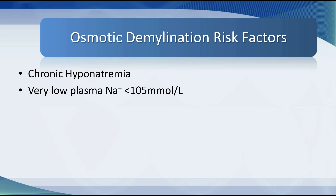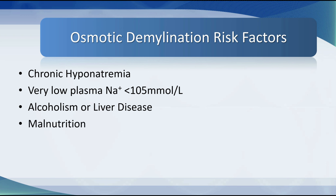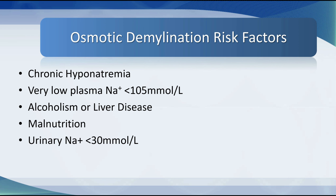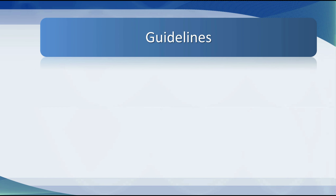Over several decades, a series of risk factors have been identified indicating a patient is at high risk for osmotic demyelination syndrome. These include: chronic hyponatremia; a very low plasma sodium, particularly below 105 millimoles per litre — indeed below 110 is considered high risk; alcoholism or liver disease; malnutrition; a urinary sodium of less than 30 millimoles per litre; a low plasma potassium; and rapid correction of abnormal, usually low plasma sodium.